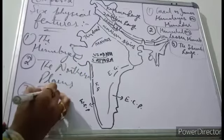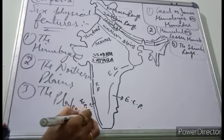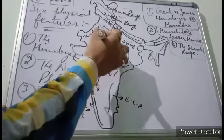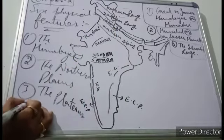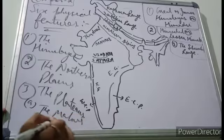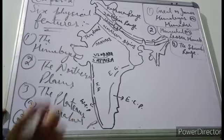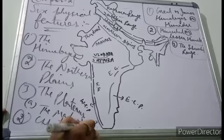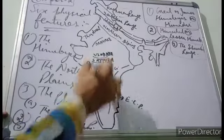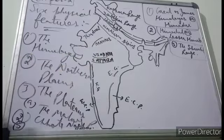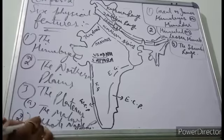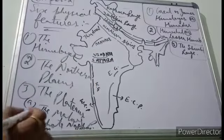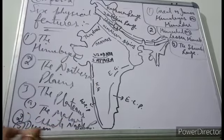The third physical feature is the Plateau region. The plateau region has three types: first is the Malwa Plateau, second is the Chota Nagpur Plateau on the right side, and third — the largest one — is the Deccan Plateau. So the three plateau types are the Malwa Plateau, the Chota Nagpur Plateau, and the Deccan Plateau.